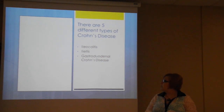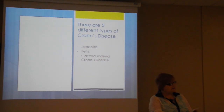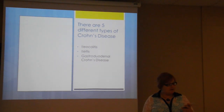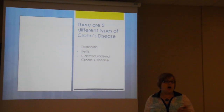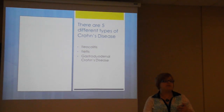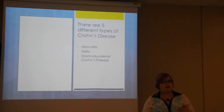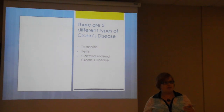The third kind of Crohn's is gastroduodenal Crohn's disease, which affects the stomach and the duodenum. The symptoms include loss of appetite, weight loss, nausea, and vomiting because this one is further up the digestive tract in the stomach area, which is why it has those particular symptoms.